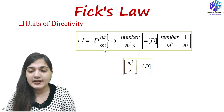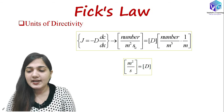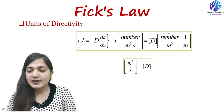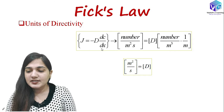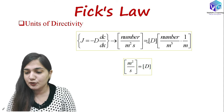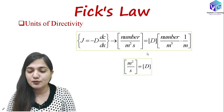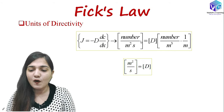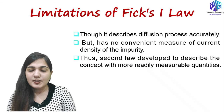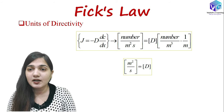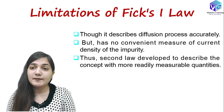Now, the unit of diffusivity or diffusion coefficient: we know J equals minus D times dC/dx. J has units of number per meter squared second. dC has units of number per meter cubed, and dx has units of meter. From these, the unit of D works out to meter squared per second. This is how you find the units of D using the units of J, dC, and dx.